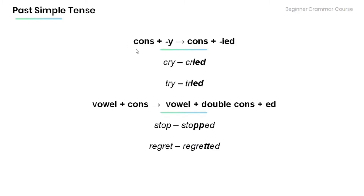When a word ends with a consonant plus Y, we keep the consonant and turn the Y into -ied to create the past simple. Have a look at the following words: cry → cried, try → tried.